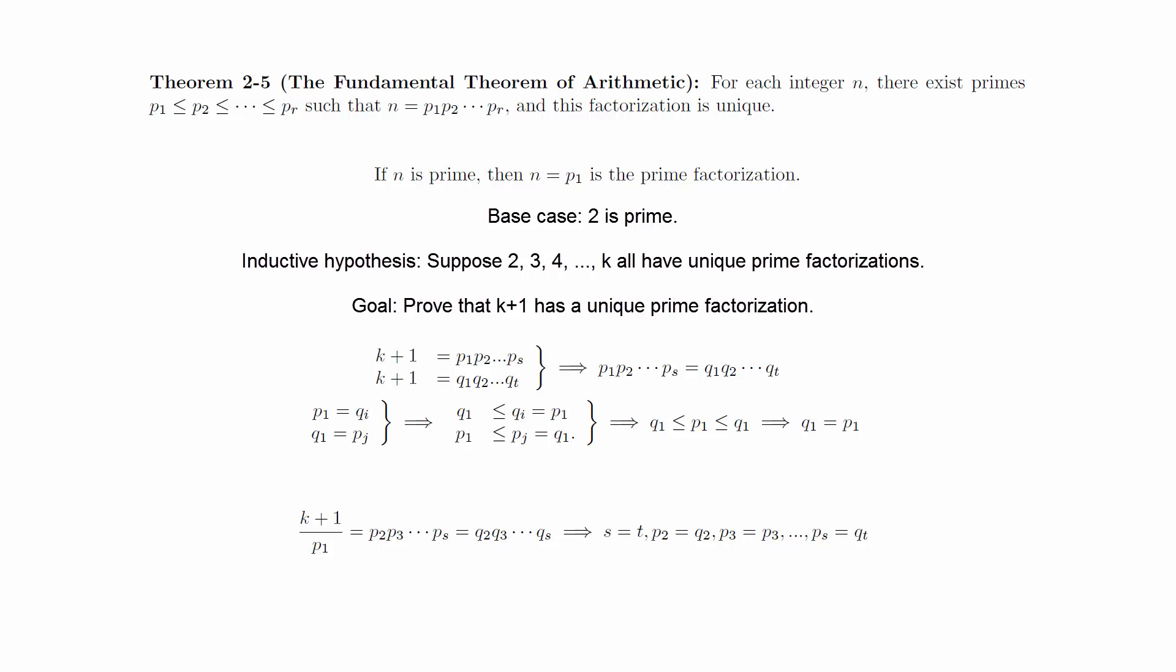The real key to the uniqueness proof was where we used corollary 2-4, which follows from the proof of the Euclidean algorithm. It turns out that in any number field where the Euclidean algorithm holds, you will also find unique prime factorization. We won't be exploring this idea any deeper in this class, but just be aware that there are places where the Euclidean algorithm fails, and this leads to other areas of mathematics.